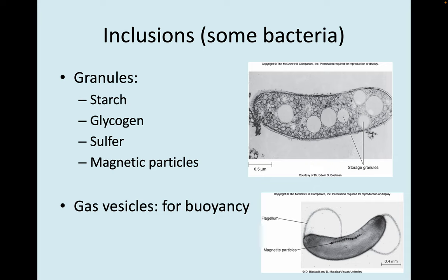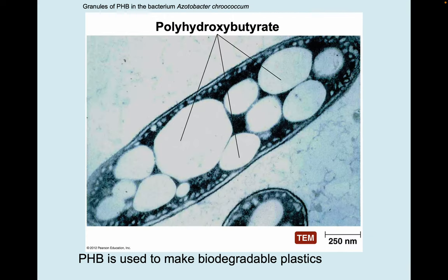Some bacteria also have inclusions — things like granules of starch or glycogen, sulfur, or even magnetic particles. Some have gas vesicles for buoyancy. These granules contain polyhydroxybutyrate, which is used to make biodegradable plastics.